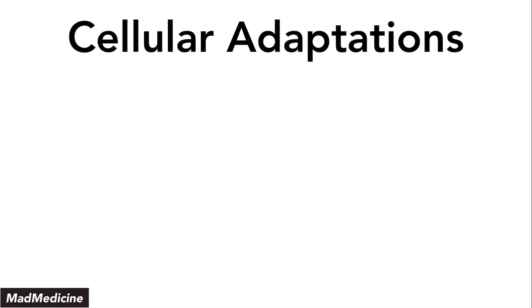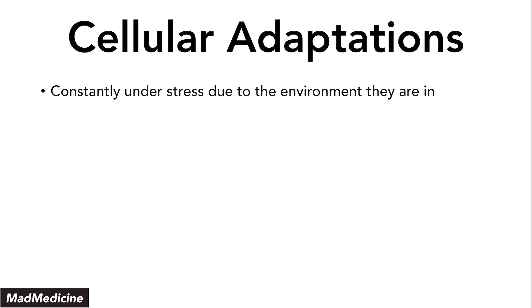When we're talking about our cells, you need to remember that your cells are constantly under a lot of stress, mainly because of the environment they are in. Our local cellular environments can be very toxic — one example is the stomach lining, which is constantly exposed to stomach acid. Because of the hydrochloric acid content, that acidic content constantly erodes away the stomach lining. But the cells in our stomach lining have adapted to handle that stress, because otherwise our acid would eat through our stomach and we would die through septic shock.